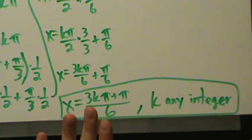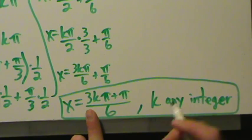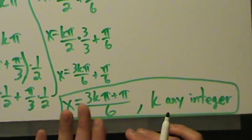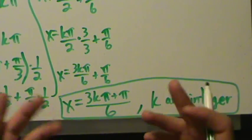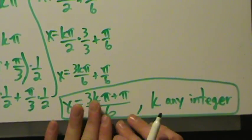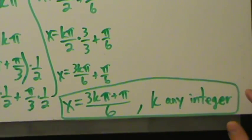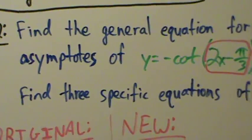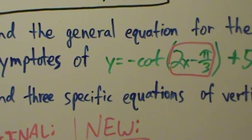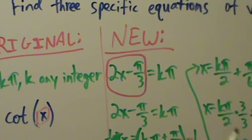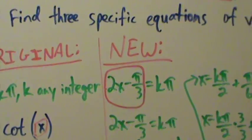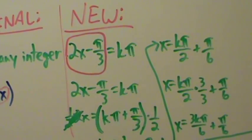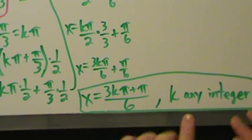This is our general equation. There are other forms we can write it in — we can factor out a pi — but this form is fine. We used the exact same process as in example 1, just using k pi instead of what we used for tangent, because for cotangent we use k pi. Take the entire expression inside the trig function, set it equal to k pi, solve for x, and we get this general equation.